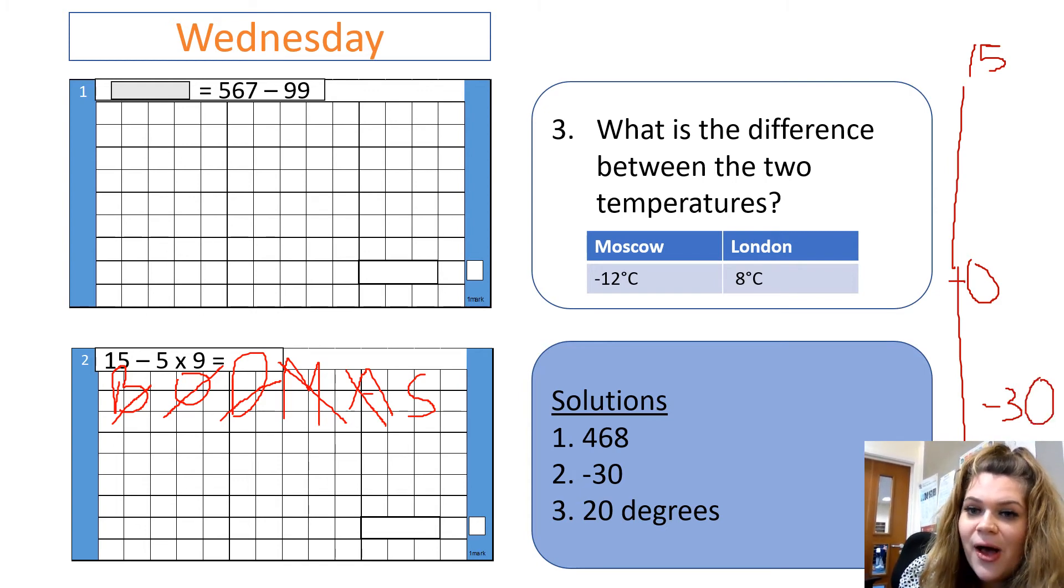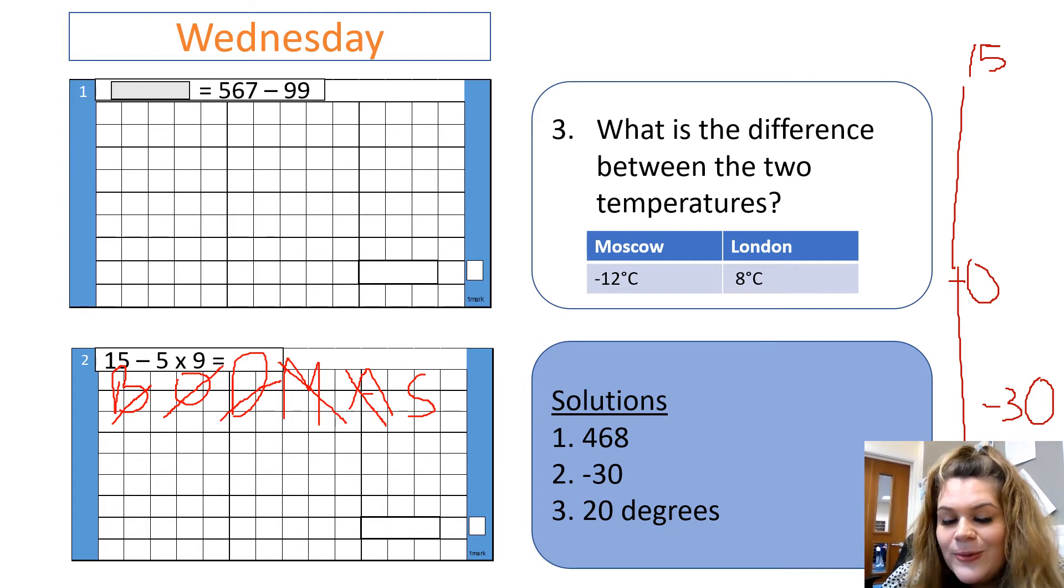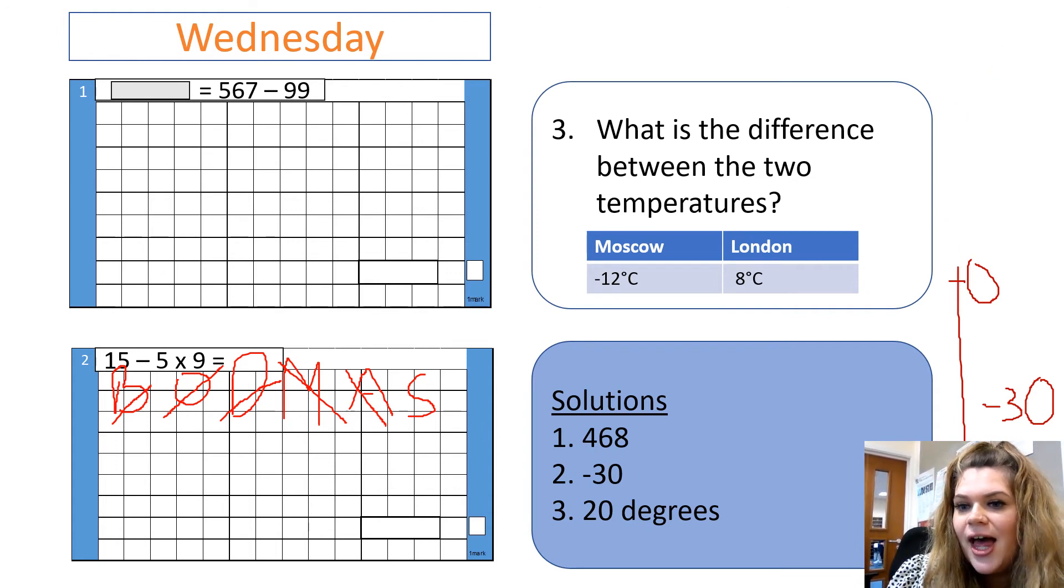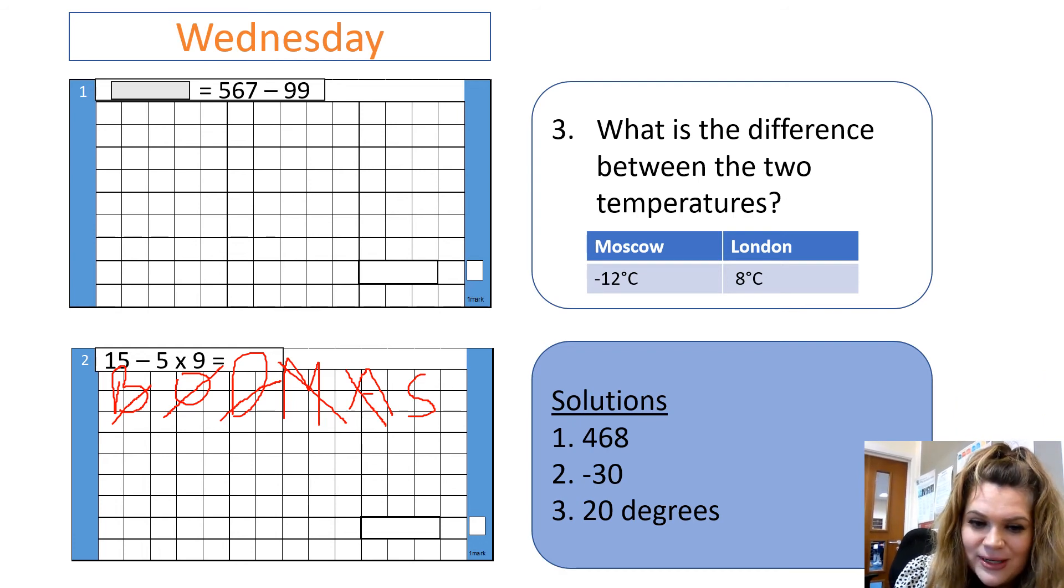Okay. Our last one. Again, negative numbers we are looking at. What is the difference between the two temperatures? So, I've got Moscow. They currently are minus 12 degrees. And in London, it is 8 degrees. We need to look at the difference.